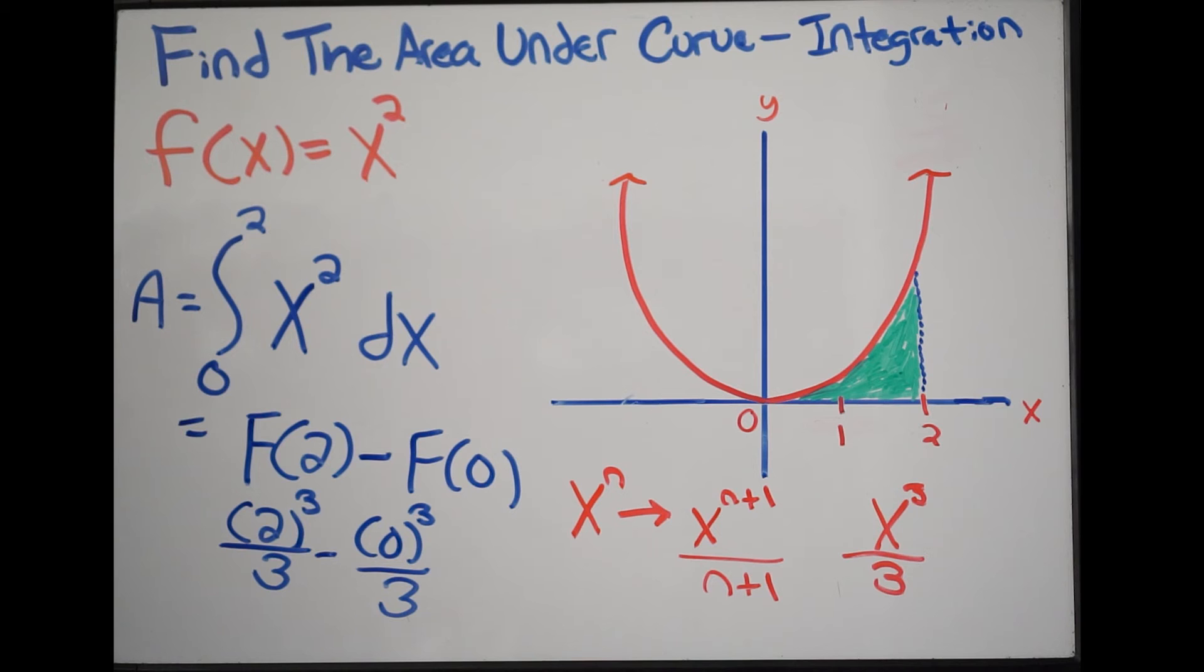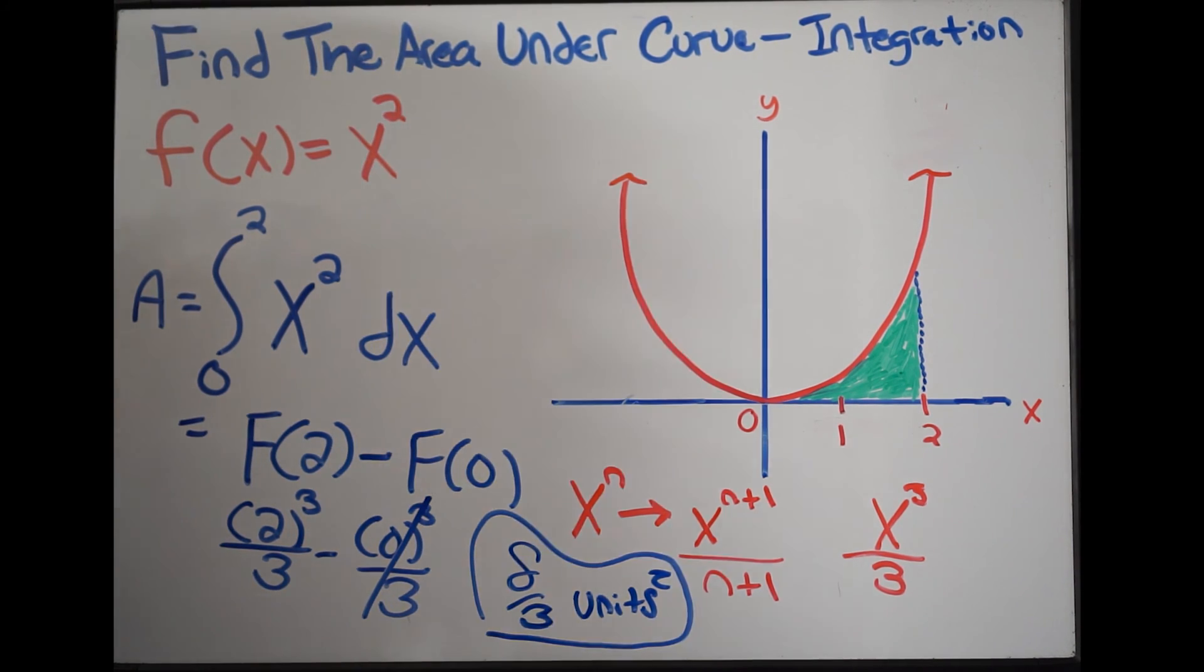So when we do this, I can see that I have a zero in my numerator, so this whole thing is just going to be zero, it cancels out. 2³ is going to be 8 and then just over 3, so I have 8/3. This is going to be the area underneath the curve. So you could say units squared. This is your final answer. So this is the area under the curve and we found it by using integration. And that is it.